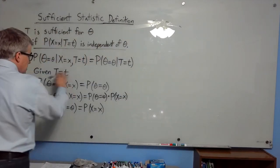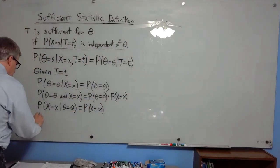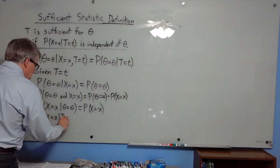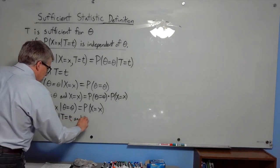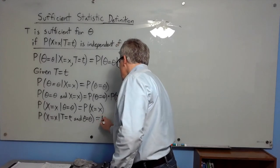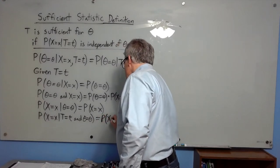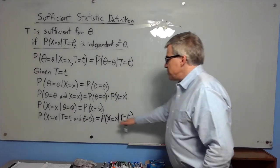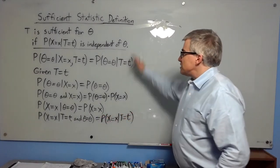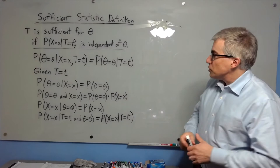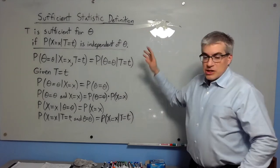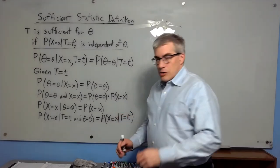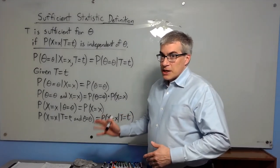This last statement is essentially the same thing as the original definition. Because putting the 'given' back in, we're saying the probability that x equals x given t equals t and theta equals theta is equal to the probability that x equals x just given t equals t — which means it's independent of theta. That's exactly what the definition says: if you have the sufficient statistic, you don't have to go back to the data.